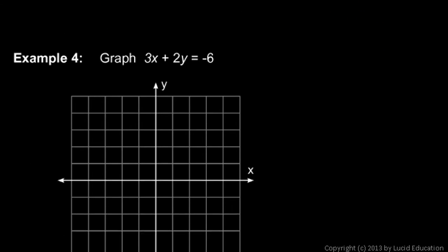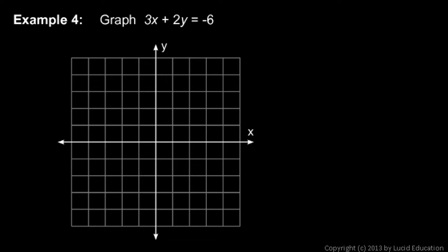One more: graph 3x plus 2y equals negative 6. Same approach. Let x equals 0. This will give us the y-intercept. If x equals 0, we have 2y equals negative 6, so y has to be negative 3. Let's plot that point: x is 0, y is negative 3. That's right here.